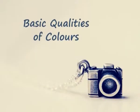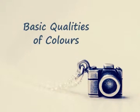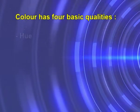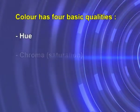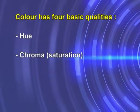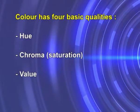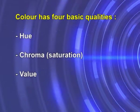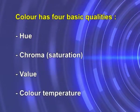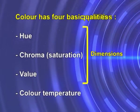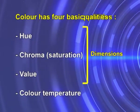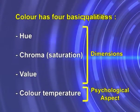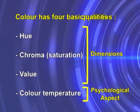Now we will see the basic qualities of color. Color has four basic qualities: number one, hue; number two, chroma or saturation; number three, value, which is the brightness or darkness of the color; and the fourth is color temperature. The first three are physical properties, often called the dimensions of color. The last one, color temperature, is a psychological aspect of color.